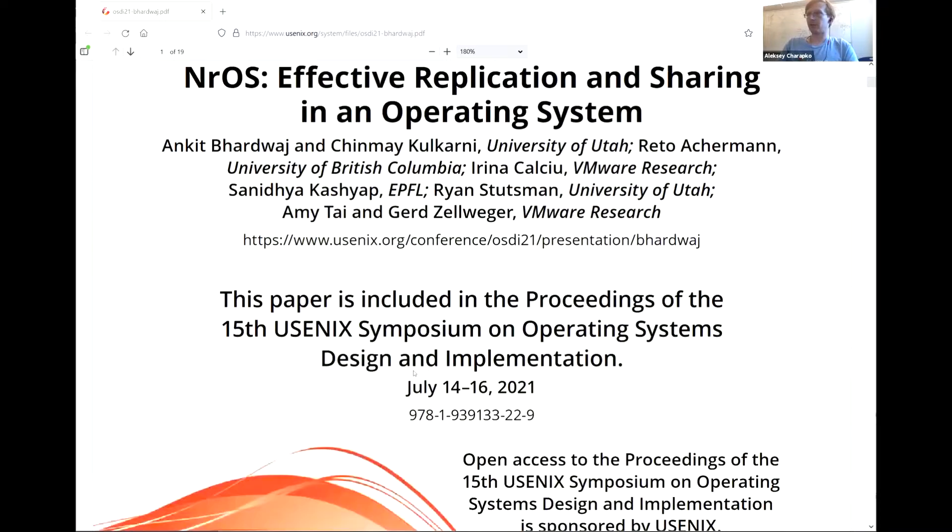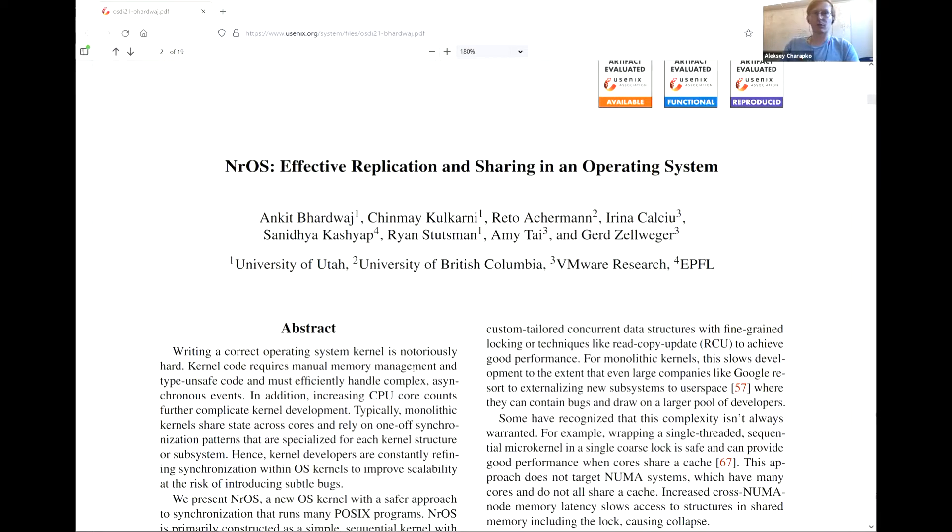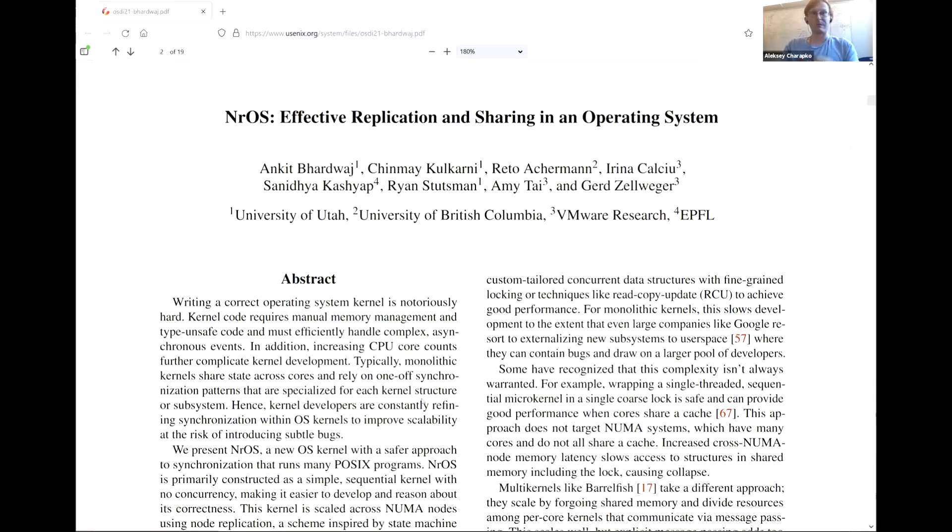So what this paper is concerned about is the replication of data structures in an operating system kernel. And why is this a problem? Well, mainly because we have very big computers right now. There's lots and lots of cores, multiple CPUs. And that means these computers have not only a lot of cores and CPUs, but these different CPUs have their own memory controllers and things like that. So, depending on where your code is running, on which core, on which CPU, you may have different access latencies to different portions of memory. The term for this is non-uniform memory access NUMA.